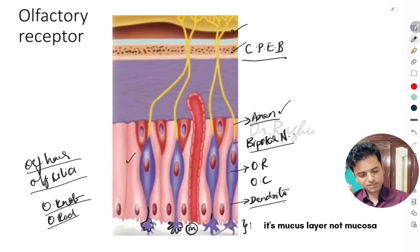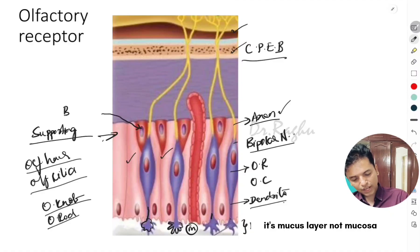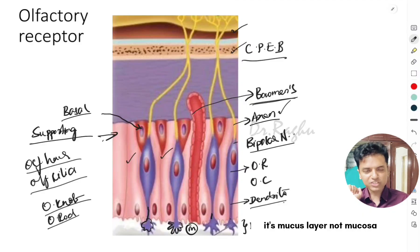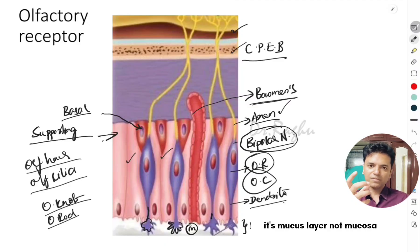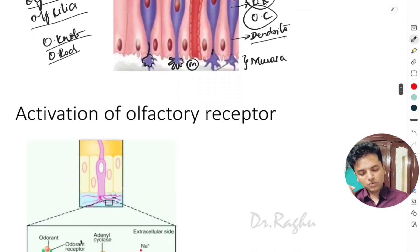Apart from the olfactory receptors, there are other cells in the olfactory membrane. Adjacent to the olfactory receptors are the supporting cells, also called sustentacular cells. There are also basal cells, and a gland-like structure called Bowman's gland, whose function is to secrete the mucus. The dendrite is expanded, forming the olfactory knob or rod, from which arise many cilia or olfactory hair embedded in the mucus.